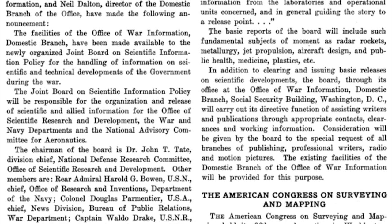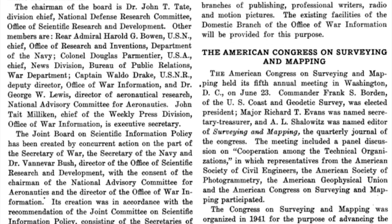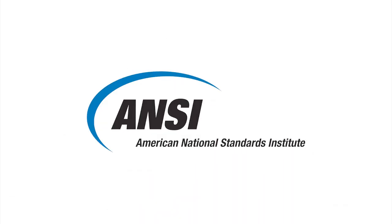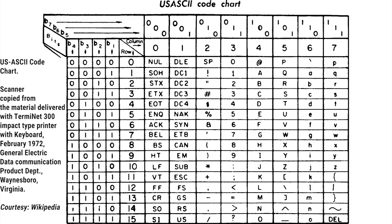In 1963, the X3, which was a part of the American Standards Association — which later became known as the American National Standards Institute, or ANSI — created the ASCII code. ASCII stands for American Standard Code for Information Interchange. It's a simple 7-bit code that is used to define plain text characters, and it is this code that is used to this very day. When you press a letter, a number, or a symbol on your keyboard, ASCII is the code that translates that keypress to the character you see on your screen or printer.